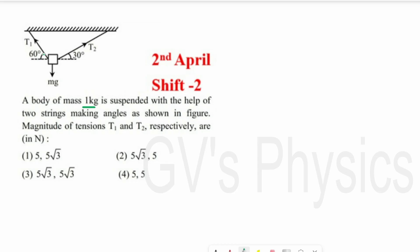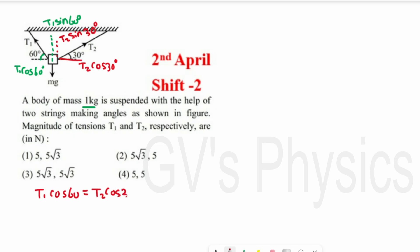T1 makes an angle of 60°, so its horizontal component is T1 cos 60° and vertical component is T1 sin 60°. Similarly, T2 makes an angle of 30°, giving T2 cos 30° horizontally and T2 sin 30° vertically. Since the object is at rest, net force is zero. In the horizontal direction: T1 cos 60° = T2 cos 30°, which gives T1 × (1/2) = T2 × (√3/2). The 2s cancel, so T1 = √3 T2. This is the first relation between T1 and T2.